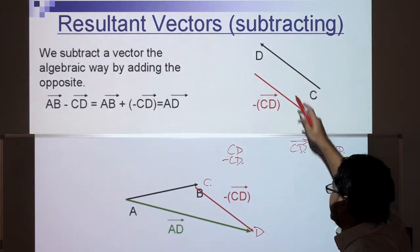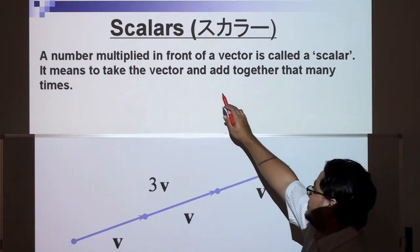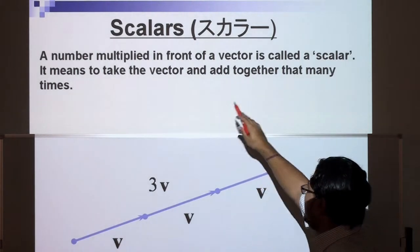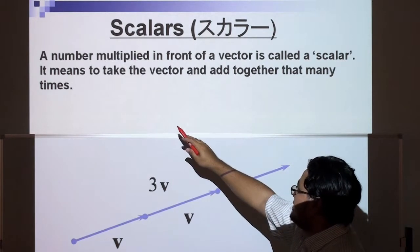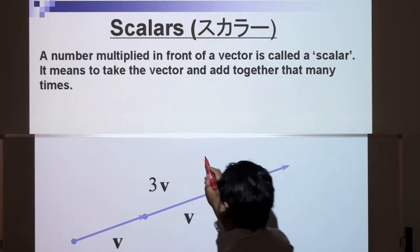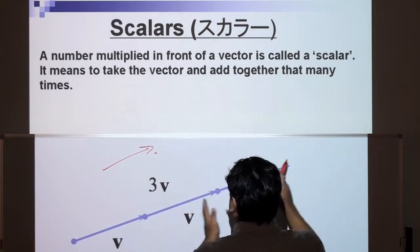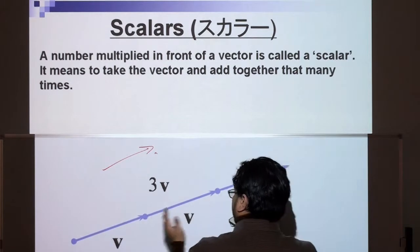Another word we need to be familiar with is a scalar or scalars. A number multiplied in front of a vector is called a scalar. It means to take the vector and add together that many times. So imagine we have v like this. 3v would just be 1, 2, 3, all in the same direction.